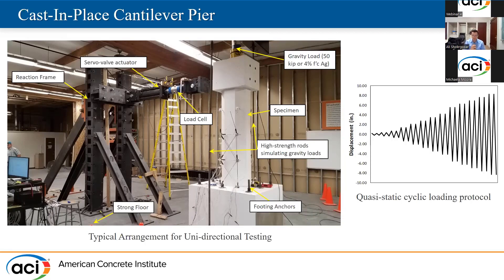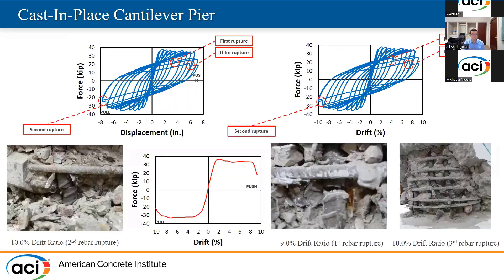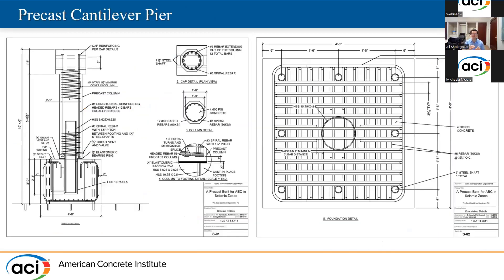The horizontal actuator applies transverse loads for push and pull on top of the column. At the bottom, we have a footing secured by eight high-strength threaded bars to the strong floor at ISU. In the right side, you can see the loading protocol we use — for each drift level, we have two full cycles of push and pull. Here you can see the result of the experiment. Three rebars broke at drift levels of nine and ten percent, and in the force-displacement and force-drift diagram, you can see three locations where the force dropped, representing where the rebar broke. The backbone curve shows results almost symmetrical in push and pull.